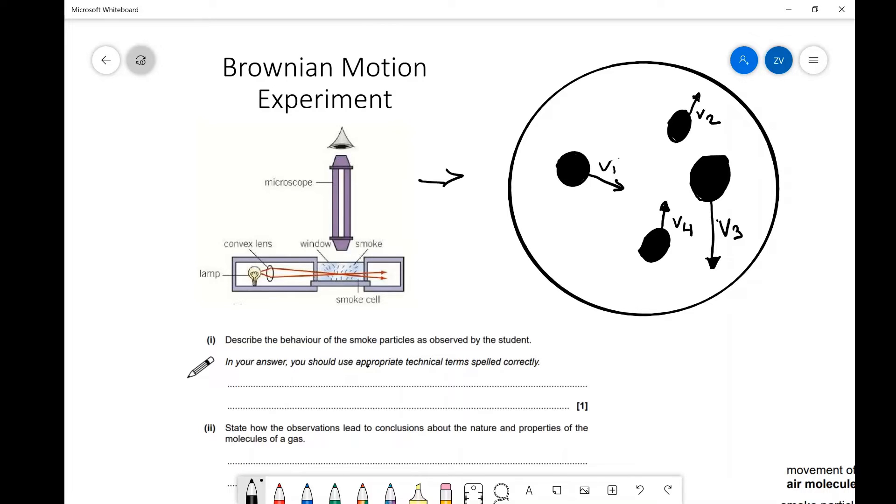For example, this one here is moving at a speed V1, pointing a little bit to the right at a certain angle. This one here at V2, V3, V4, etc. All of these smoke particles are going to be moving completely randomly.